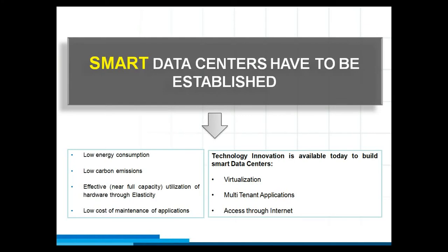Considering all these things, what is important is that smart data centers need to be established which consume less energy, with low carbon emissions. The capacity utilization of these data centers — the technology engines and hardware — needs to be effective and elastic. That means when demand is high, capacity should be expanded, and when demand is low, capacity needs to be shrunk so that utilization and consumption are effective.